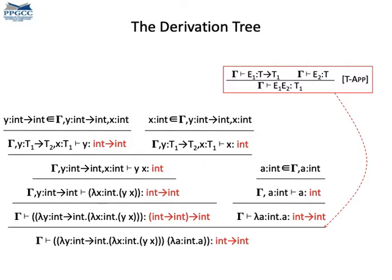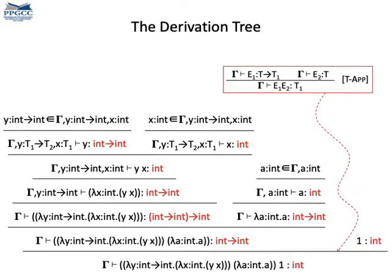And we can combine these two expressions to derive the type of an application. An application has two sides. If the left side has type t1 arrow t2 and the right side has type t1, then the resulting application has type t2. Perhaps you could stop the video and take a look into the rules. And we can combine this last fact with the fact that the constant 1 has type int to have the type of the final expression, which is int.